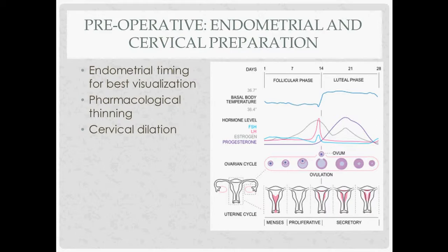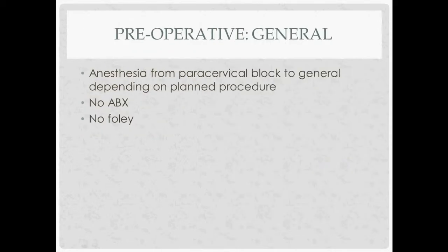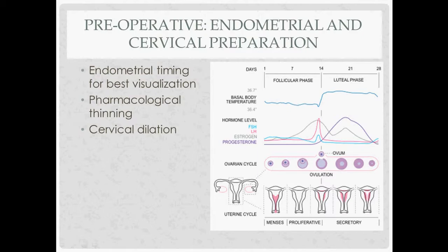For preoperative endometrial preparation, the goal is being able to see well. If you're in the follicular phase, which has two parts — menstrual and proliferative — you don't want to do this procedure during the menstrual phase if possible, because it'll be hard to see with the blood. The proliferative phase is the best time because there's no longer blood but the endometrial lining hasn't built up significantly like it does in the secretory phase, which could make it hard to see things like polyps. So proliferative phase is best; try to avoid menses; secretory might make it harder to see.